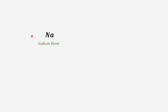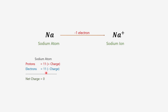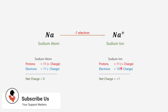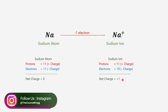To understand this more precisely, let us consider a sodium atom. When a sodium atom loses one electron, it becomes a sodium ion. A sodium atom contains 11 protons and 11 electrons, so the net charge on the sodium atom is zero. On the other hand, a sodium ion contains 11 protons and 10 electrons, so the net charge on the sodium ion is plus one. So it is called a positive ion.